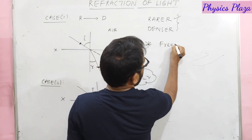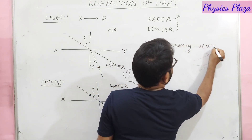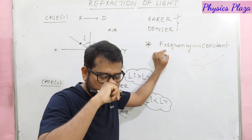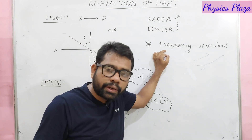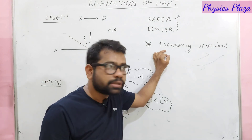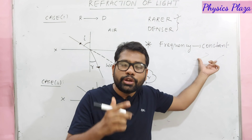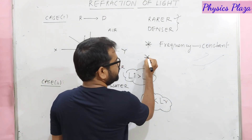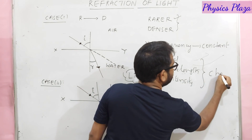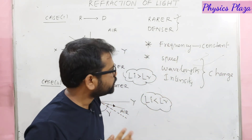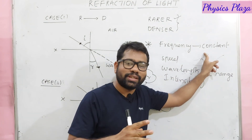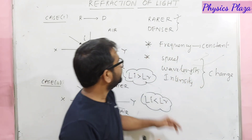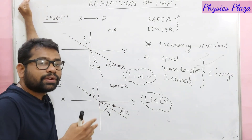During refraction, one very important thing is that frequency remains constant. Frequency depends on the source of light — it is a characteristic property of the source. So as long as the source remains the same, frequency remains the same. In an exam, if asked which physical quantity remains the same during refraction, the answer is frequency. Speed, wavelength, and intensity change during refraction.